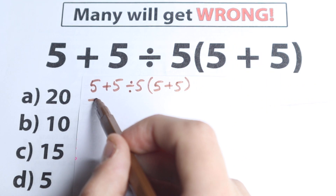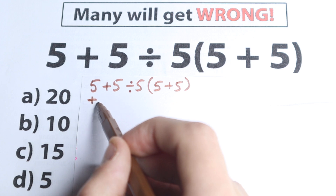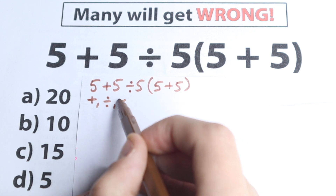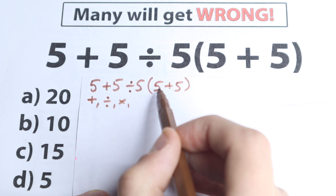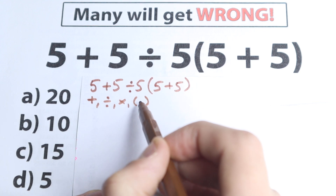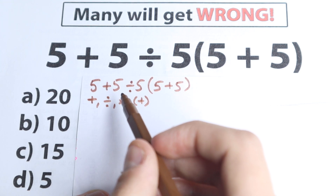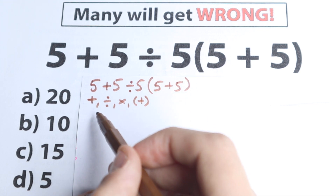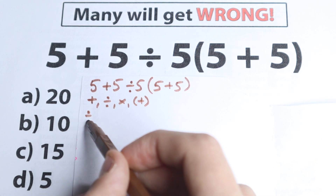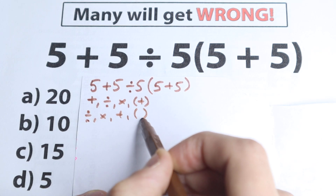But one part of students solves it like this — they say: let's start from division, start from the addition, then divide, then multiply, and then maybe find the answer in parentheses. So this is one approach to the order of operations. Another part of students thinks: let's divide first, then multiply, then add, then parentheses.